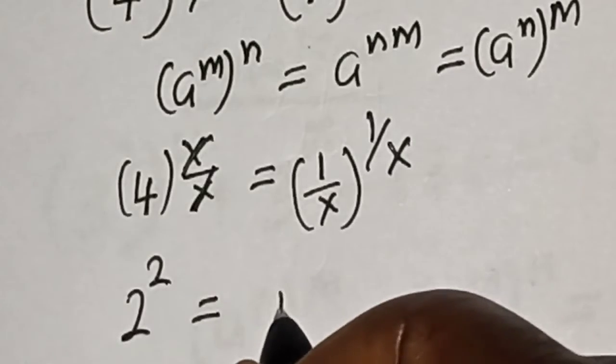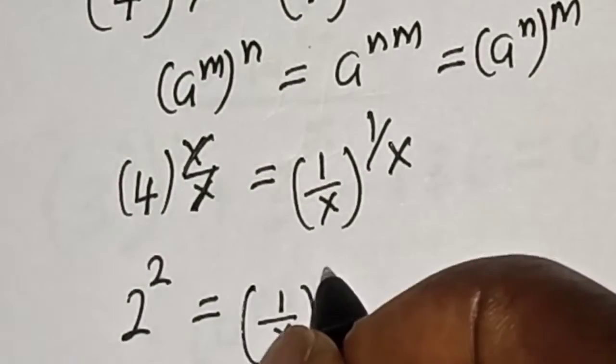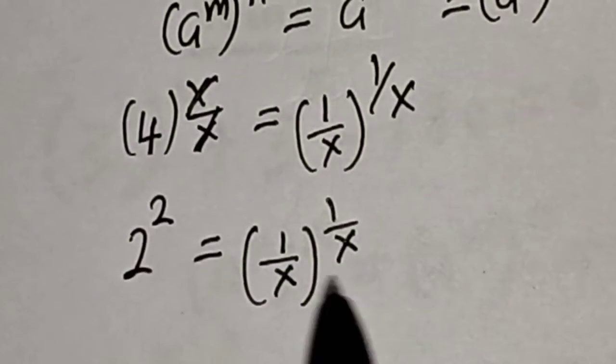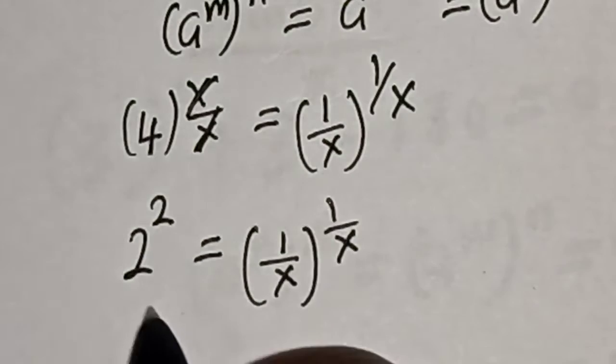4 equals 1 over x, all to the power 1 over x. Then by comparing the exponents, 4 equals 2 squared, and